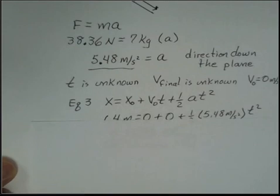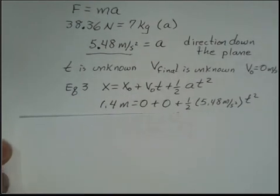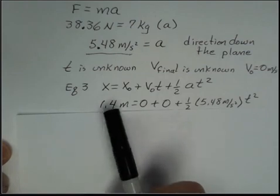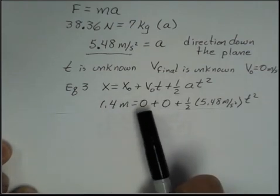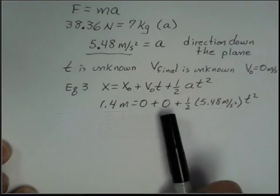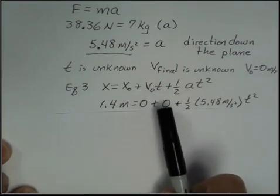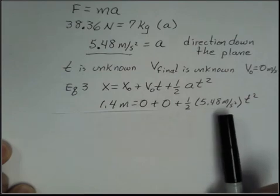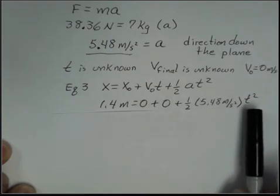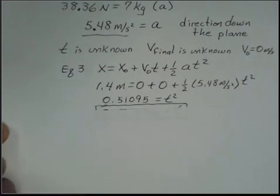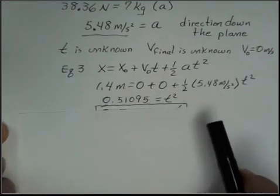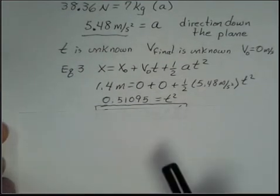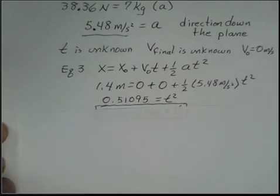But we have a set of numbers here. Only the time is unknown. The final position number is 1.4 meters. Our initial position we'll call 0. We're releasing from rest so v0 is 0, so this term becomes 0. One half, we calculated the acceleration previously, and then t squared. So we multiply both sides by 2, we divide both sides by 5.48, we get 0.51095 for the value of t squared, and we take a square root.